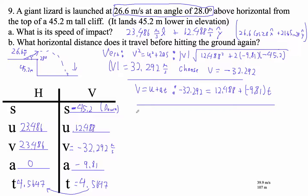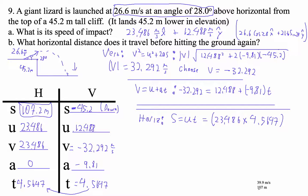And now we can do the horizontal direction. So horizontally, all we ever do is just S is UT. So that's going to be this guy times this guy times this guy. U is 23.486 times 4.5647. I got 107.2 meters. So that's how far horizontally it goes. And that's what I got before.